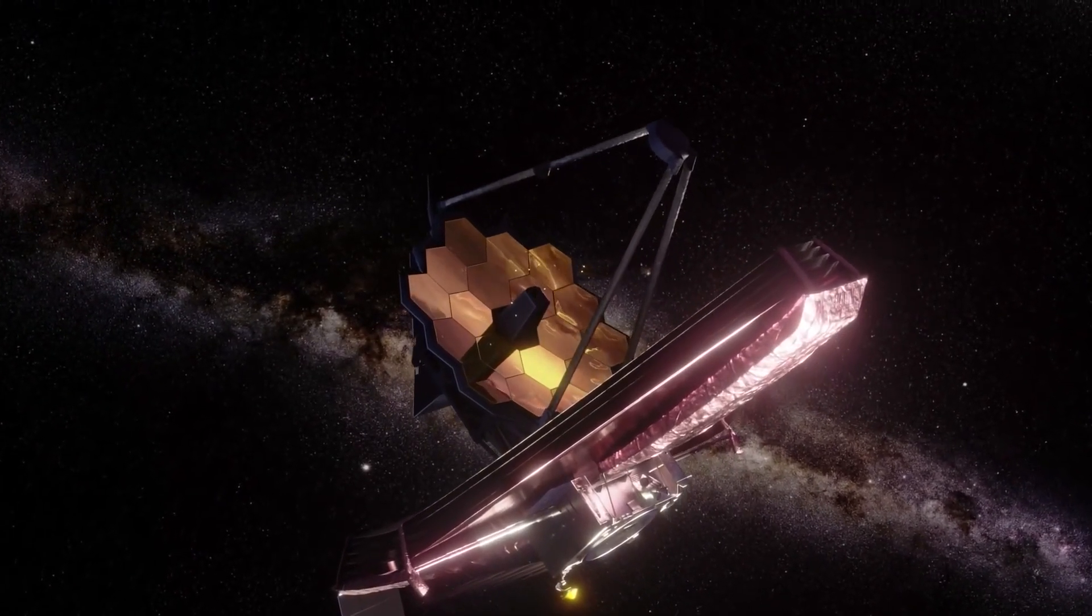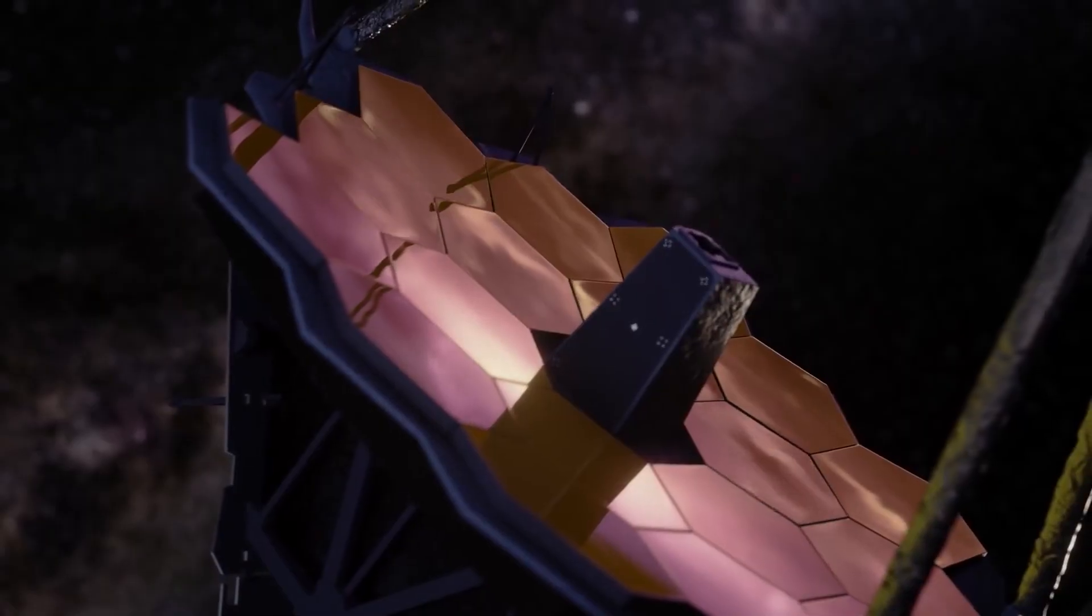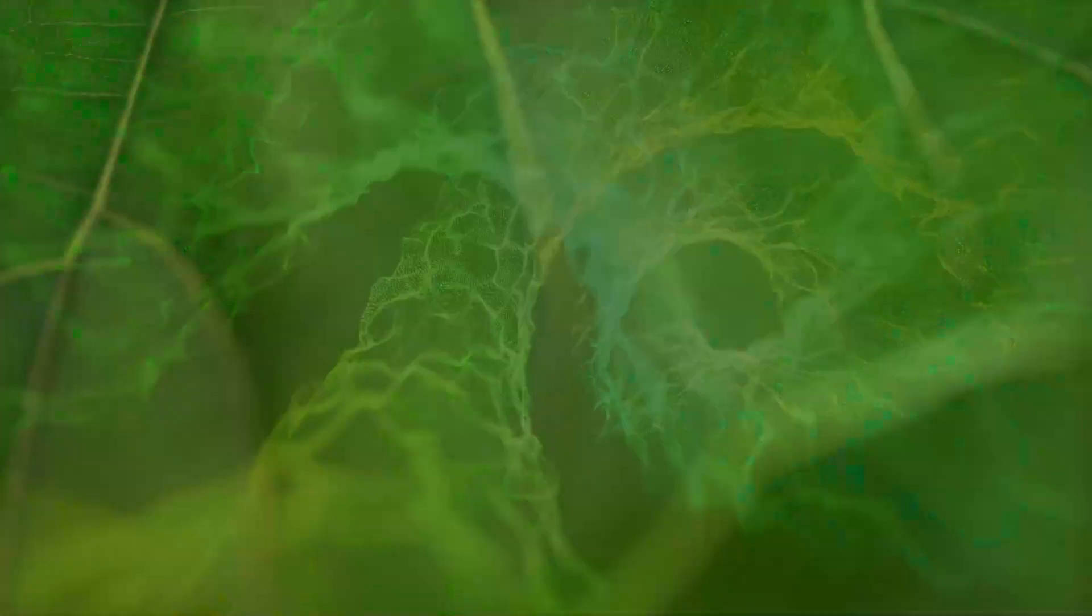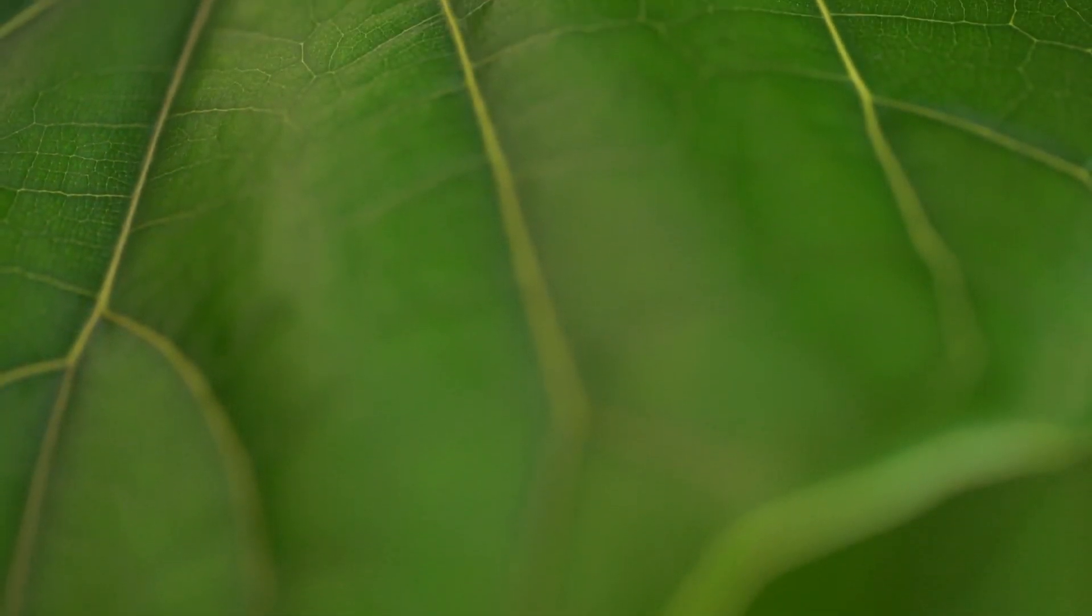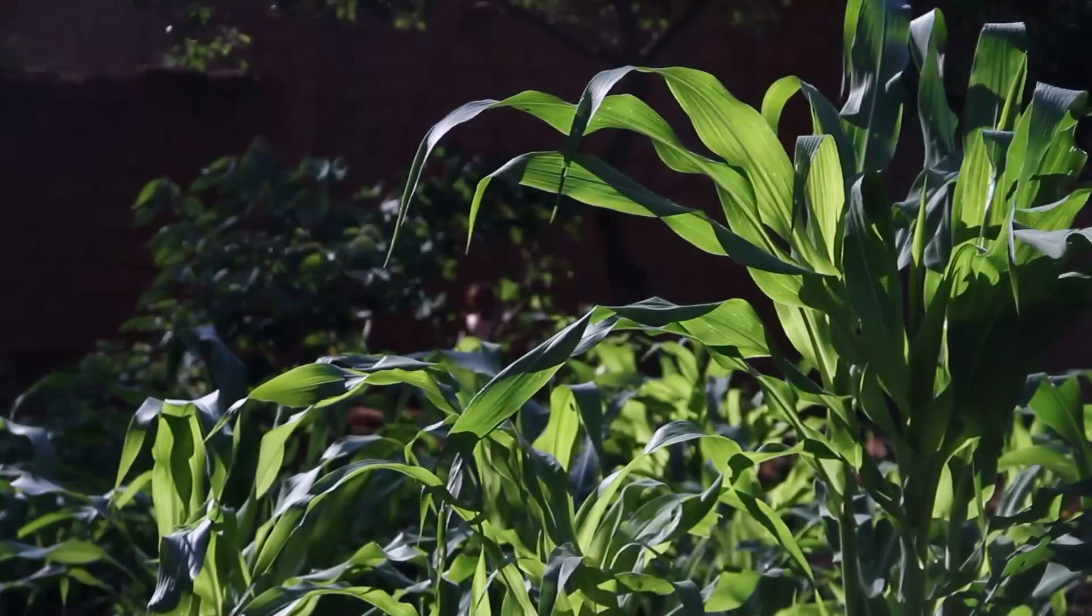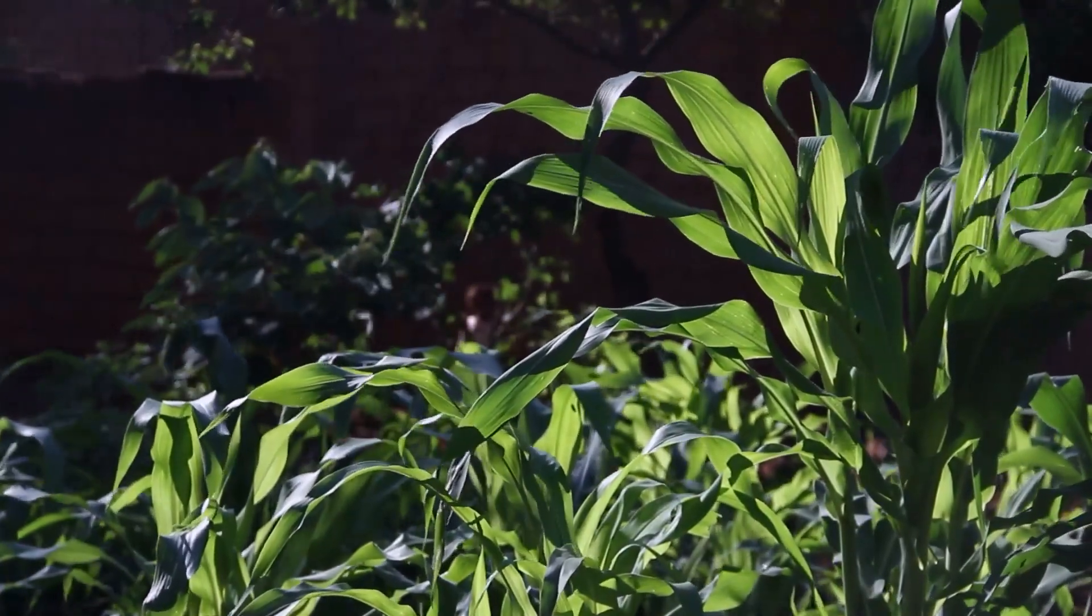All matter interacts with light to some degree, by absorbing certain wavelengths and reflecting others. Think of chlorophyll, for example. The green pigmentation of plants comes from chlorophyll's ability to absorb reds and blues in the visible spectrum and reflect the greens, which is what we end up seeing.